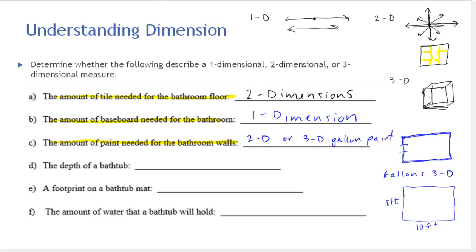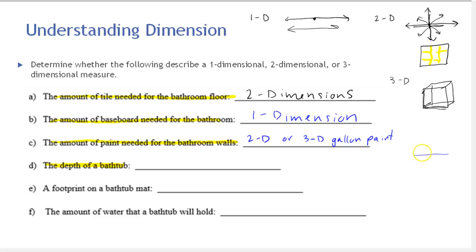Next: the depth of a bathtub. A bathtub itself is definitely three-dimensional, but if we're measuring the depth, we don't care how large the floor of the tub is — all we're measuring is the depth, which refers to one single dimension. You could take a yardstick or ruler and measure that depth, and that depth would be a line. So the depth of the bathtub is a one-dimensional measure.